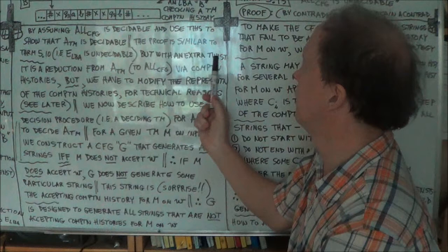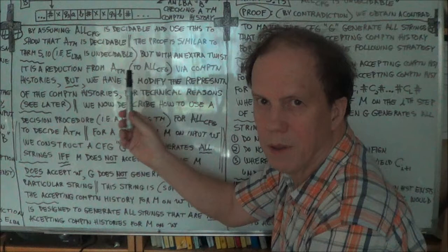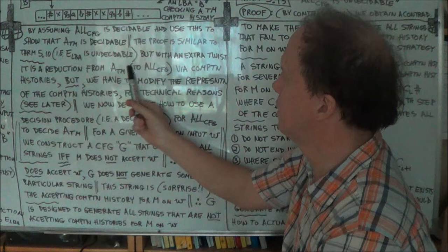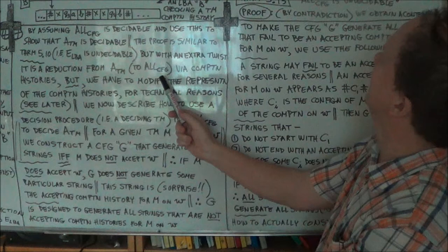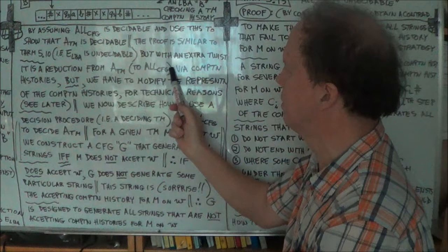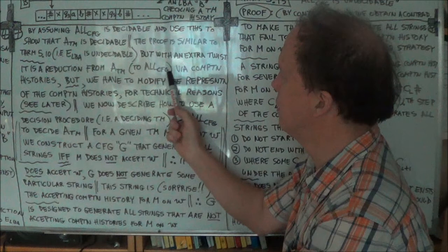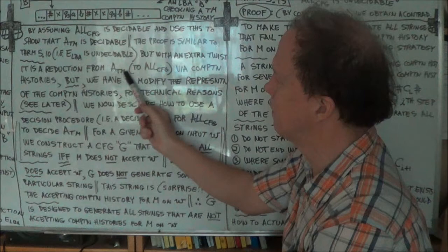There's an extra twist: we're going to reduce from A_TM to ALL_CFG. So we'll use the Turing machine R that decides ALL_CFG, and we'll use that Turing machine R to help us decide A_TM. That's the big strategy, and we're going to use computation histories.